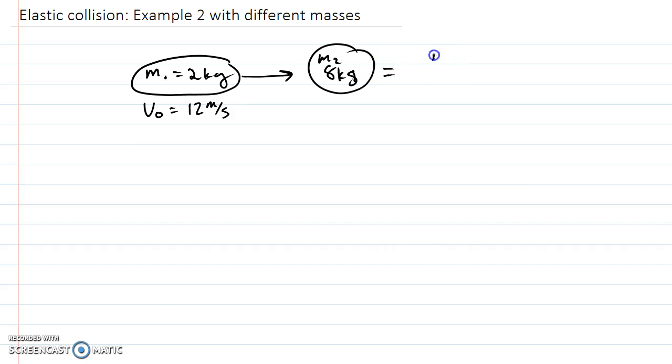And then afterwards, they're going to bounce apart, so we have mass 1, which will stay the same, and mass 2, which will stay the same. But they're going to have a velocity for each of them. Okay, so again, let's first work on momentum, and then we'll work on kinetic energy.